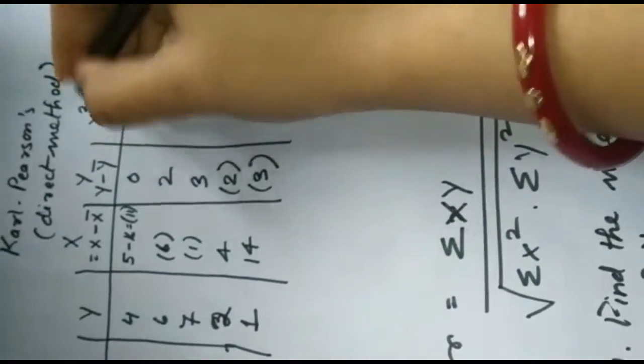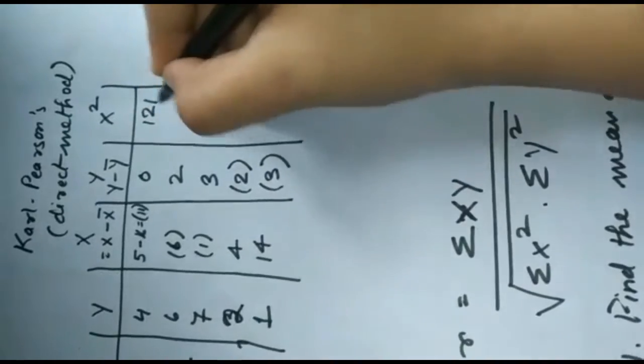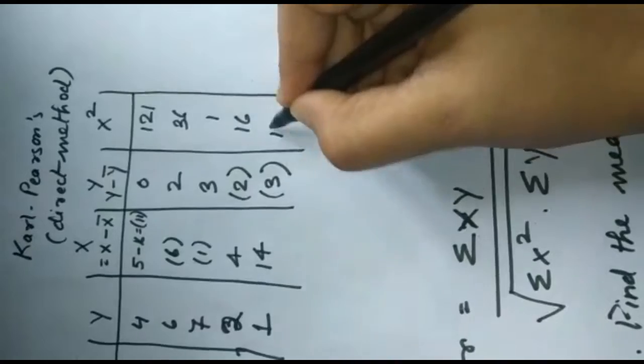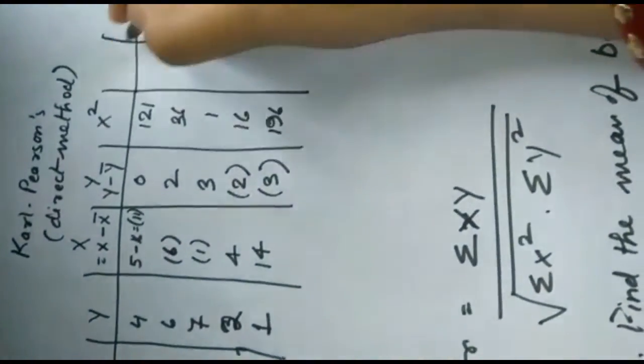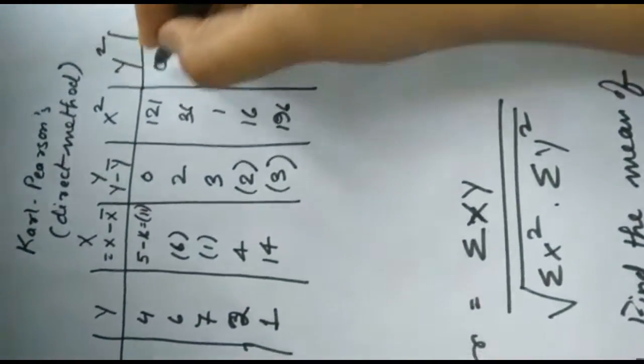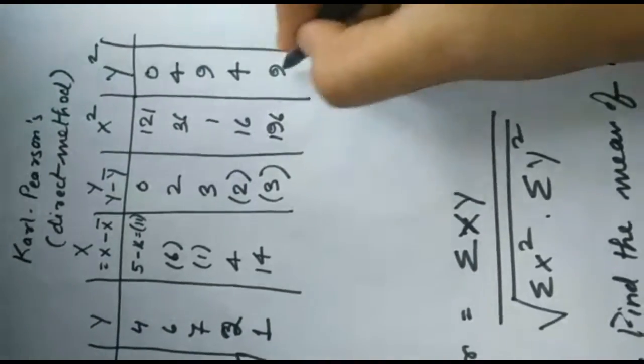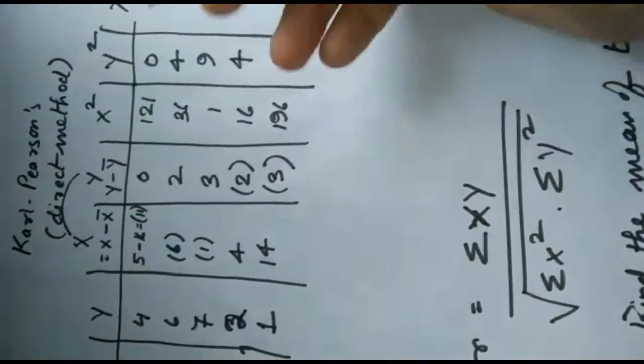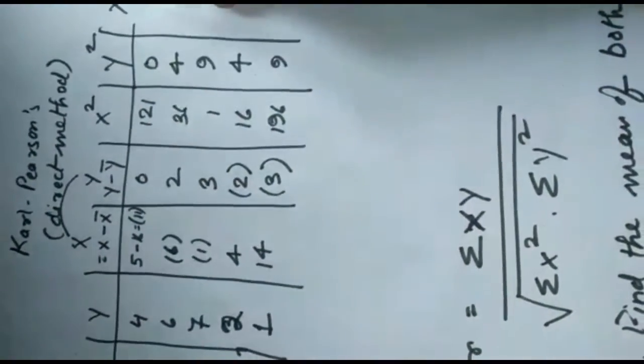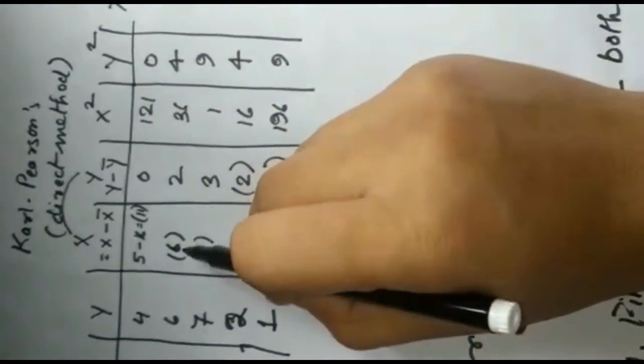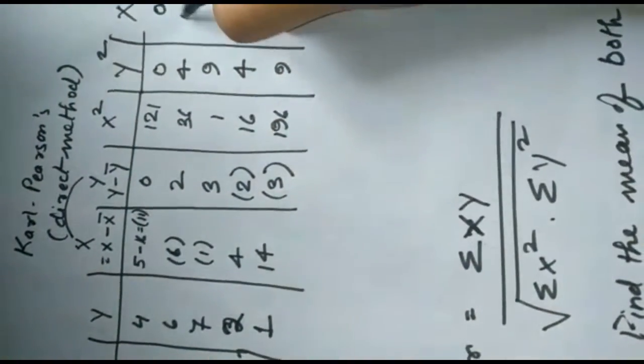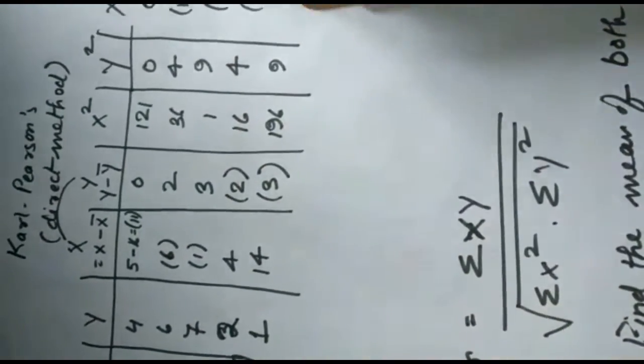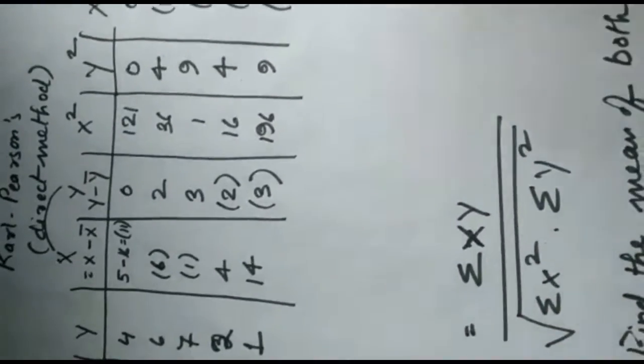Now we have x square: 11 square is 121, 6 square is 36, 1 square is 1, 4 square is 16, 14 square is 196. Next, we have y square: 0, 4, 9, 4, 9. Then we have xy. So minus 11 into 0 is 0, minus 6 into 2 is minus 12, minus 1 into 3 is minus 3, 4 into minus 2 is minus 8, 14 into minus 3 is minus 42.